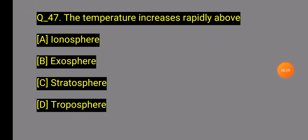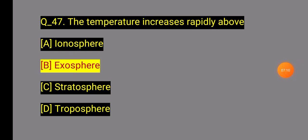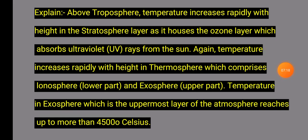Question 47: In which layer does temperature increase rapidly with altitude? Option B: Exosphere — temperature increases rapidly and evidently. Question 47 Explanation: Above the troposphere, temperature increases rapidly with height in the stratosphere, which houses the ozone layer that absorbs ultraviolet rays from the Sun. Temperature also increases rapidly with height in the thermosphere. The exosphere, the uppermost layer of the atmosphere, reaches temperatures of more than 4,000–5,000 degrees Celsius.